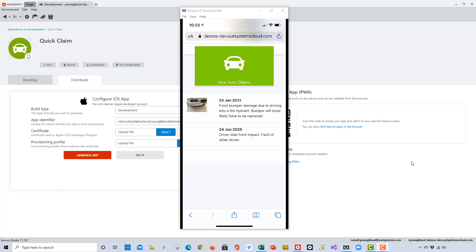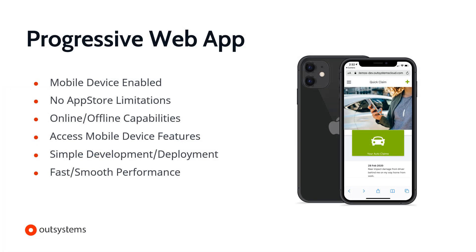I'm going to go ahead and save this to the database, and then we should be able to see our claim on the list of claims. In the last 15 minutes, we have created a mobile application that is not specific to platform. There are no App Store limitations. It has online and offline capabilities, so we can use this application regardless of whether we're on a network. We can very easily access mobile device features — in this example, geolocation as well as the camera functionality. And very simple deployment: all we needed was a QR code to scan and begin to use and test the application on our device.